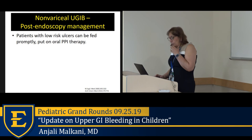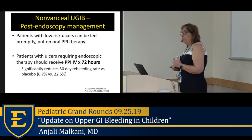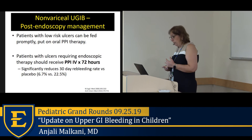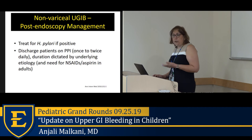After endoscopy, low-risk ulcers can be fed promptly and started on oral PPI. Patients who needed hemostatic intervention should receive IV PPI for two to three days — this significantly reduces the 30-day re-bleeding rate versus placebo. In all upper GI bleeds, check H. pylori status and treat if positive. Discharge on oral PPI as appropriate based on findings.